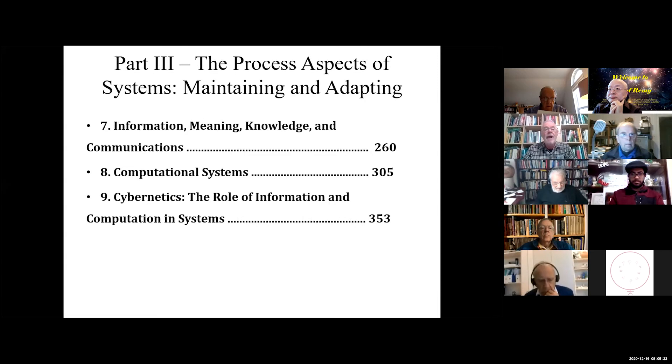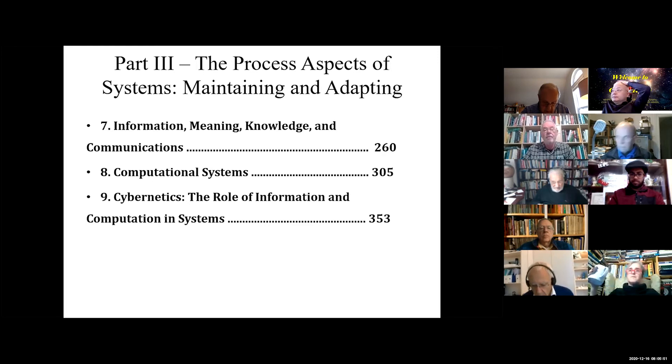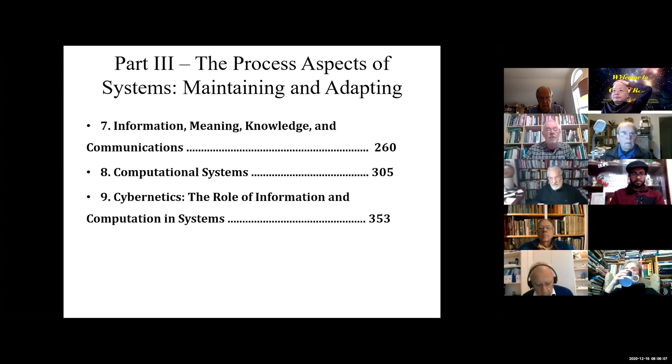Part three is getting into the process aspects. Here we tackle information, meaning, knowledge, and communications. I think we did something I've not seen before in that I differentiate between information and knowledge and don't try to conflate those two. For example, DNA doesn't encode information, it encodes knowledge, which when it gets decoded becomes information. And then since I am a computer scientist, we had a fairly decent chapter on computational systems, including not just mechanical and electrical computers but also biological. And then a chapter on cybernetics, building up in this part that you need to have information and computational systems in order to have systems that embody cybernetic principles.